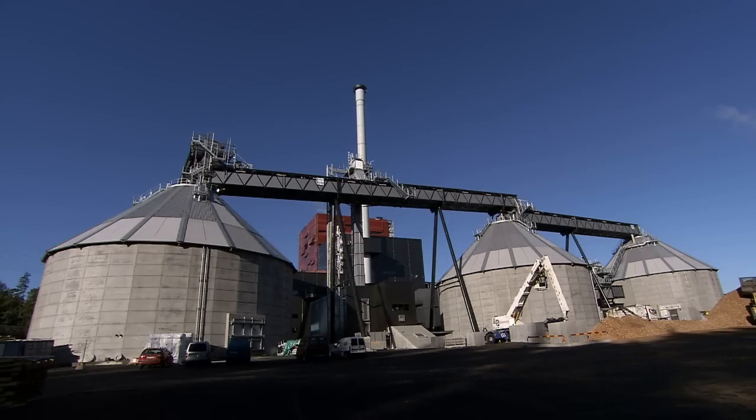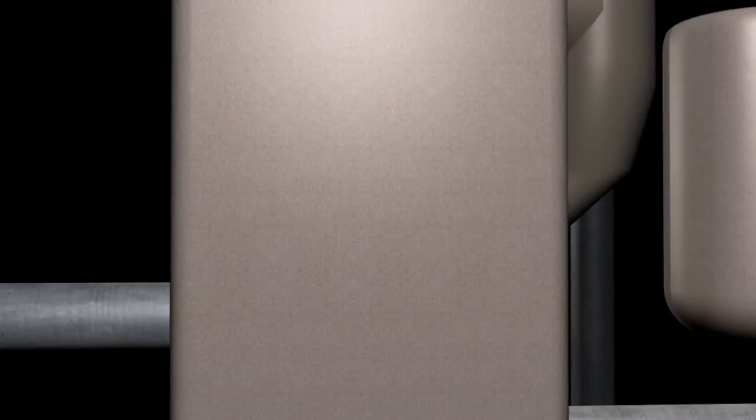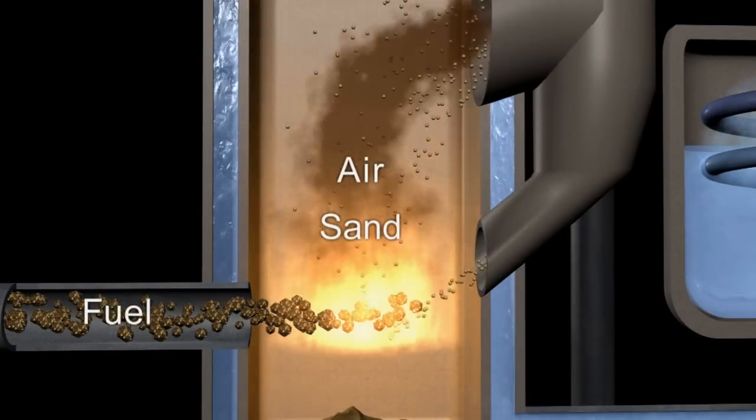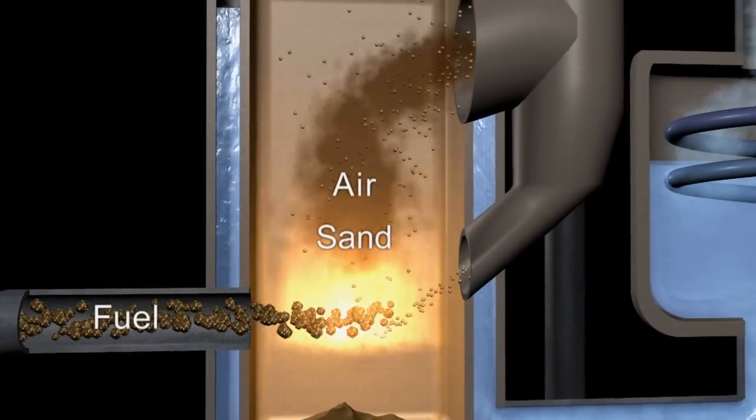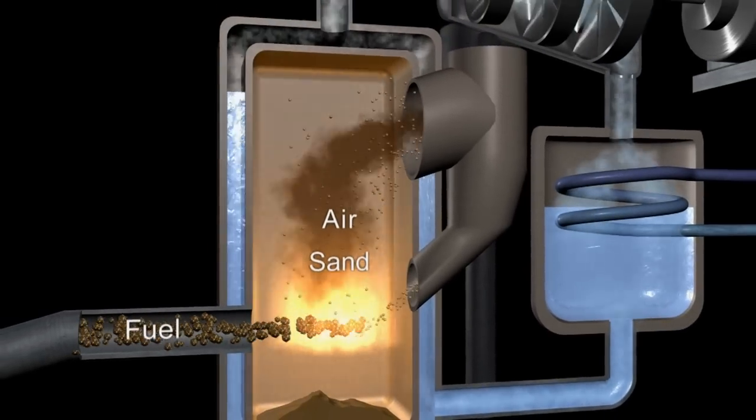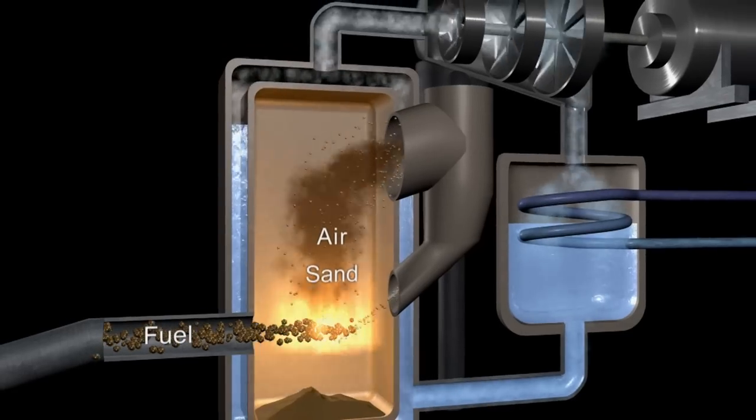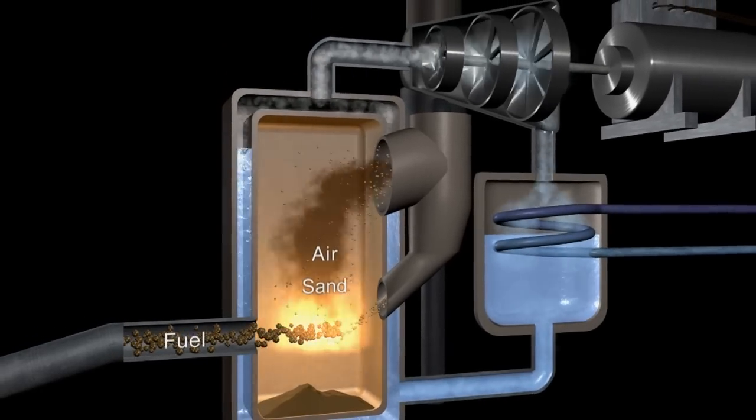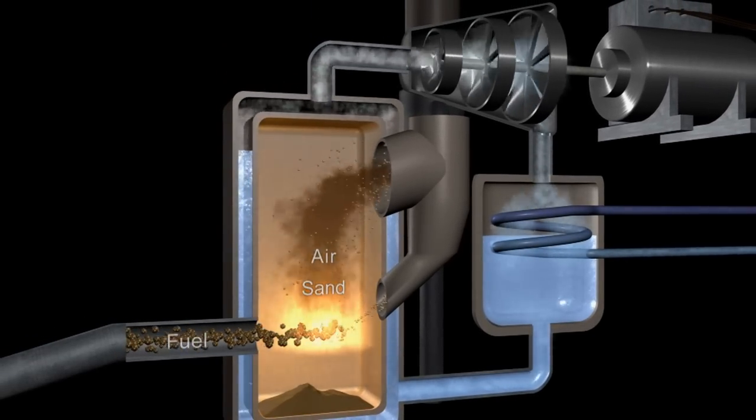Then, the process is usually something like this. Inside the furnace, air is introduced through the sand at high pressure, causing it to circulate. As the fuel is added, it mixes with the circulating sand in the air and is heated to around 900 degrees Celsius, giving it an even and controlled burn that heats water into steam.